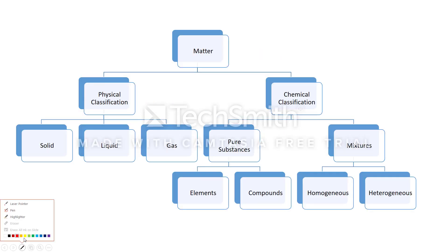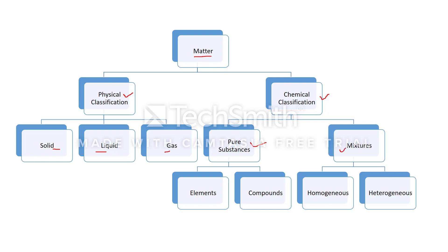First, let's come to matter. In the first chapter we discussed that matter, on the basis of physical state, is classified as solid, liquid, and gas. This is called physical classification. In this chapter we will discuss about the chemical classification — that is, on the basis of composition, matter is classified as pure substance and mixture.